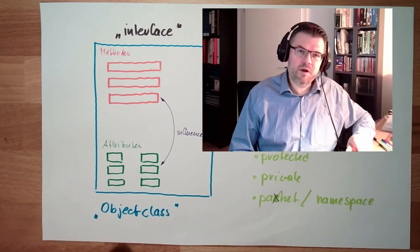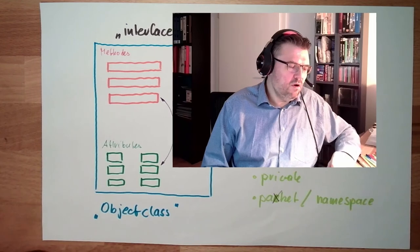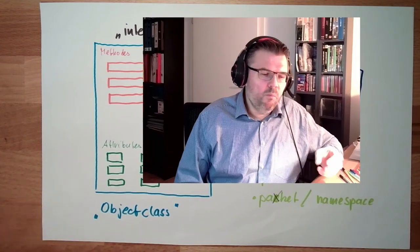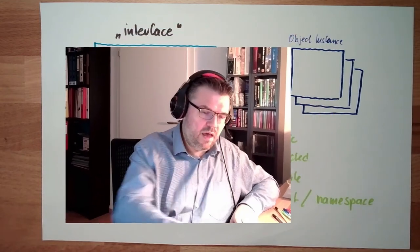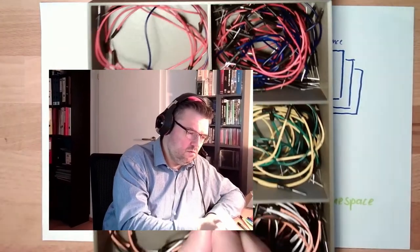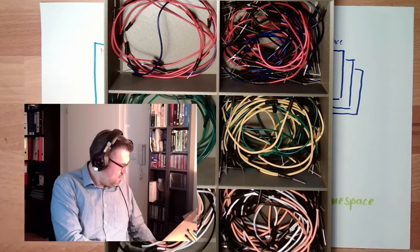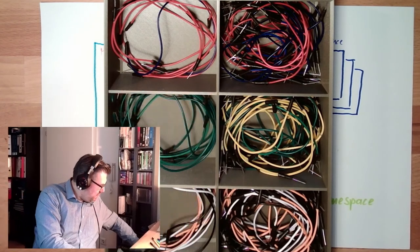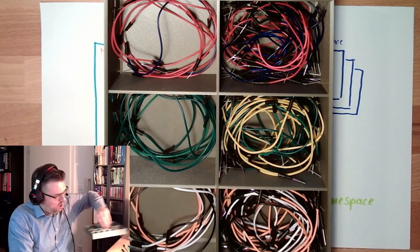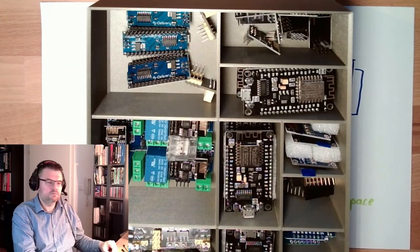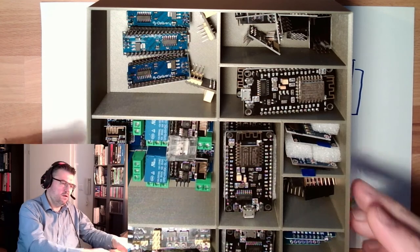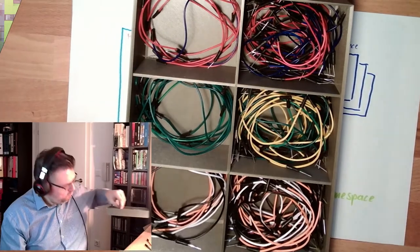Some programming languages even allow to define operators for objects. So there's a plus operator maybe. And then I can add one box and make the plus operator and put the second one on there. Now I make the minus operator, put it away again.